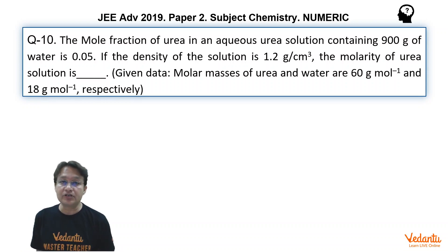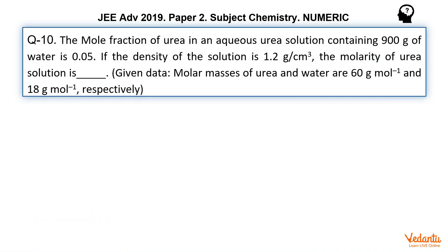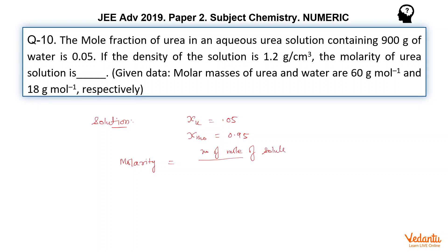So there are various approaches to solve this problem. Let us see what the simplest one is. So mole fraction of urea is 0.05. That means mole fraction of urea equals 0.05 and mole fraction of water must be 0.95. To find the molarity — molarity is equal to number of moles of solute divided by volume of solution in liters.